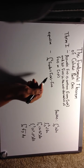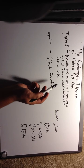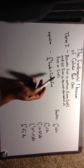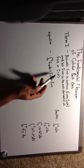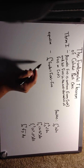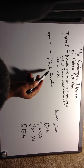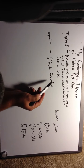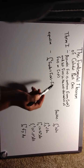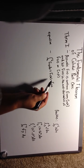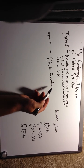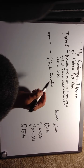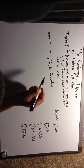When we let f of x be continuous on its closed interval, and we let capital F of x be the anti-derivative of little f of x on the closed interval, then we get the integral from a to b of f of x dx is equal to the anti-derivative evaluated at b minus the anti-derivative evaluated at a. This gives you the area under the curve on the closed interval.